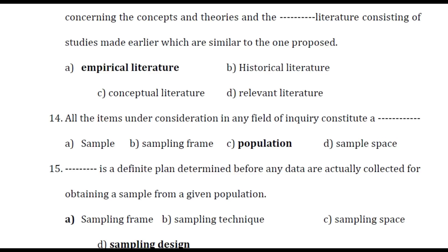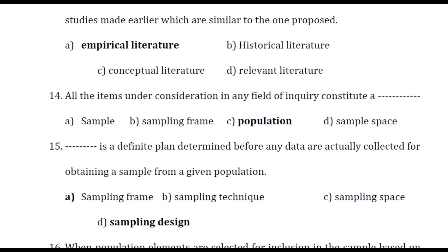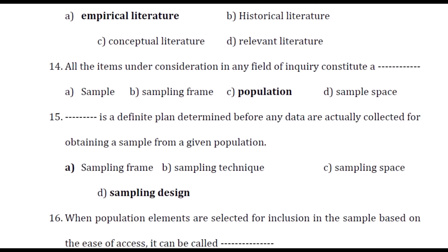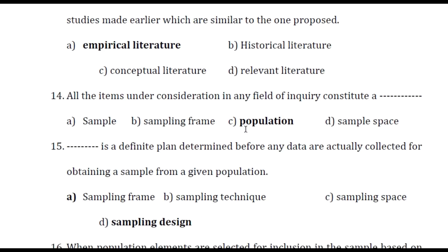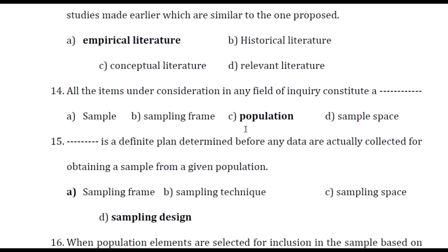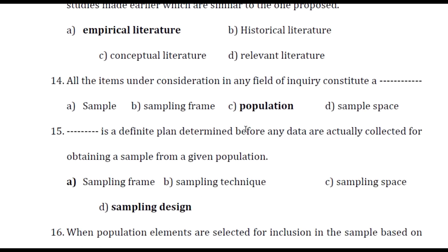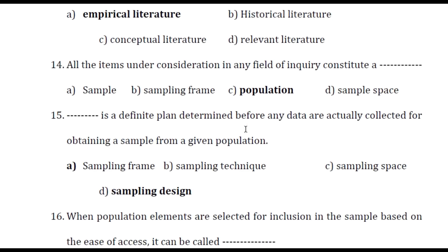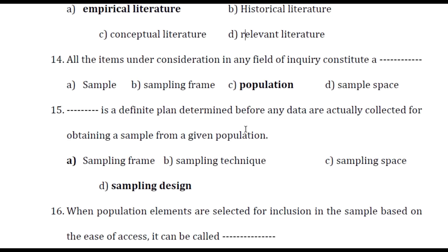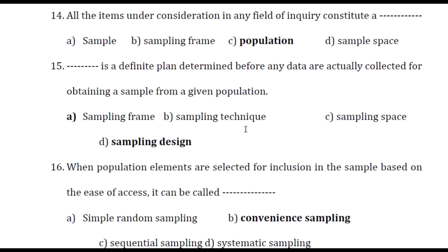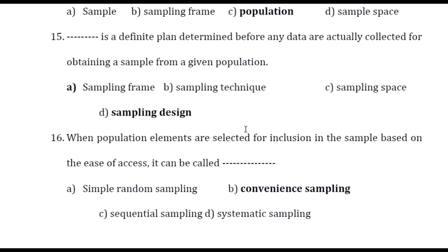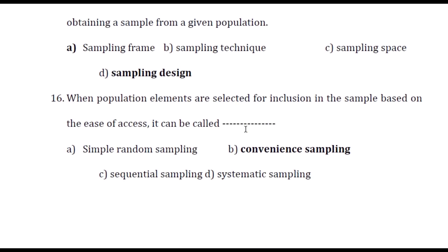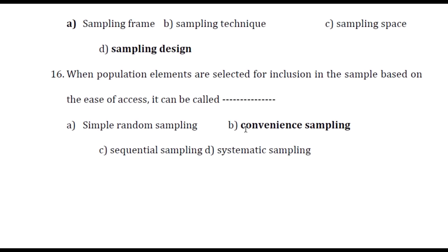All items under consideration in any field of inquiry constitute a population. Sampling design is a definite plan determined before any data are actually collected for obtaining a sample from a given population. When population elements are selected for inclusion in the sample based on ease of access, it is called convenient sampling.